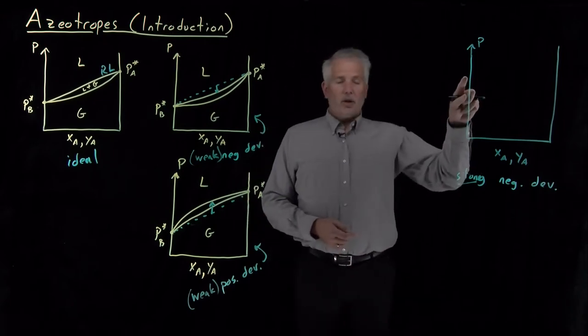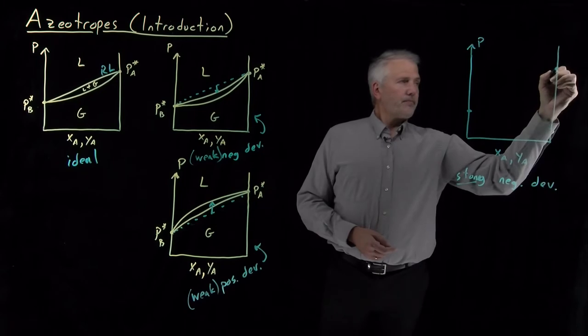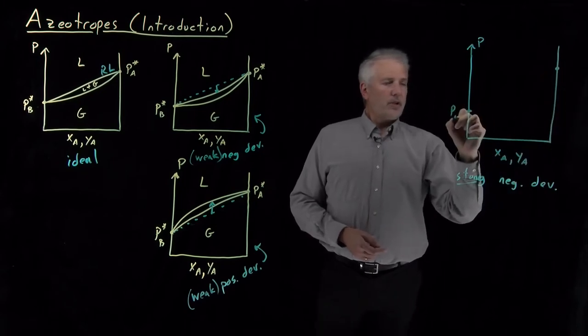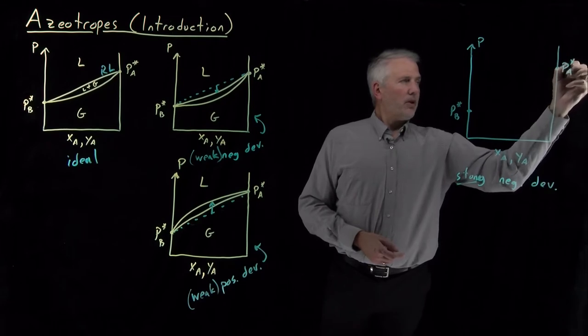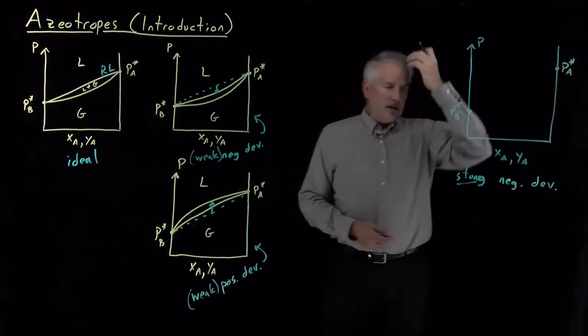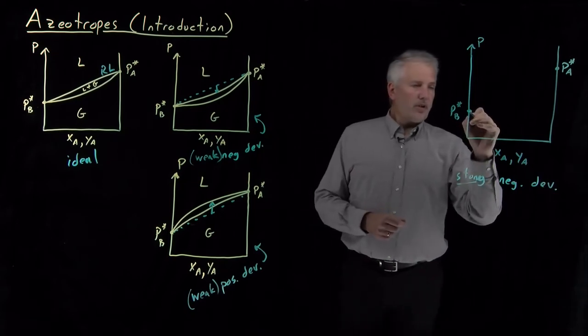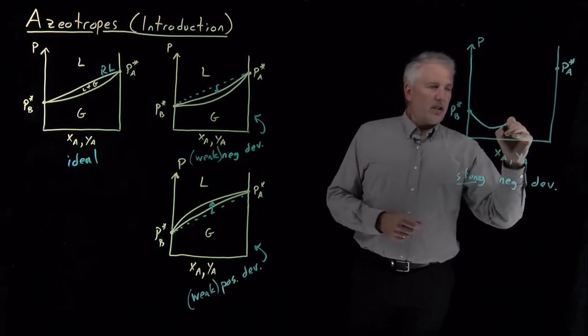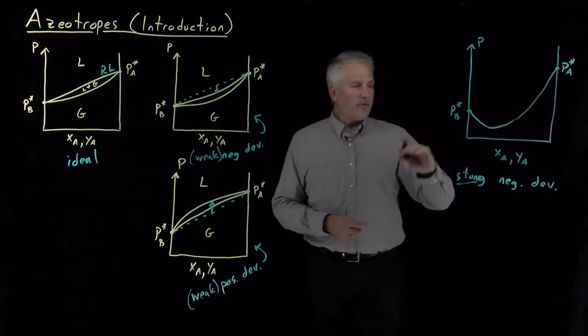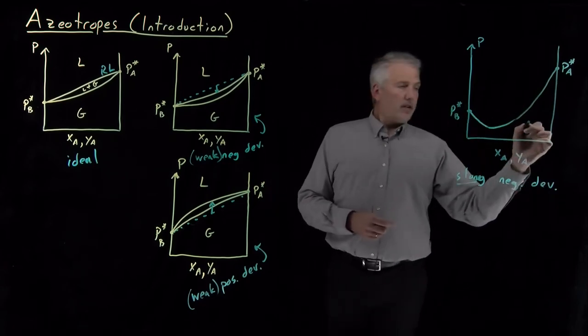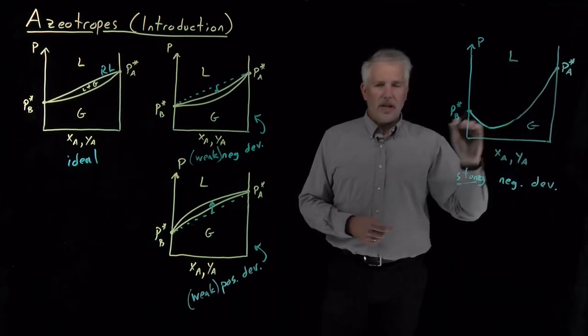So you might think the only thing I need to do is make these curves sag downward a little bit more. So here's pressure of pure solvent B. Here's the vapor pressure of pure solvent A. I could make, let's say, the dew point curve sag down a lot, and the bubble point curve sag down a little less, and I won't draw that curve yet.